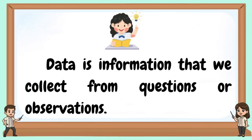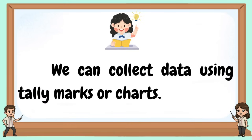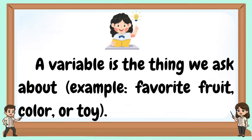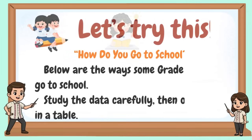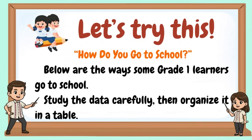Data is information that we collect from questions or observations. We can collect data using tally marks or charts. A variable is the thing we ask about — example: favorite fruit, color, or toy. Let's try this: how do you go to school?